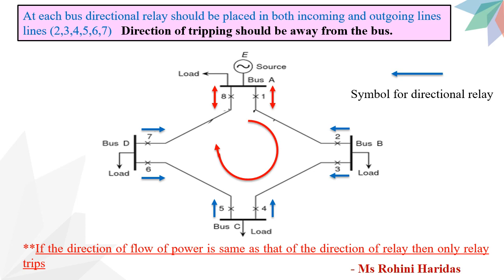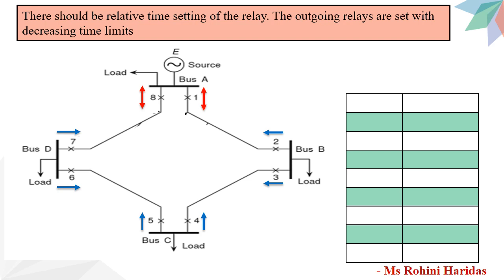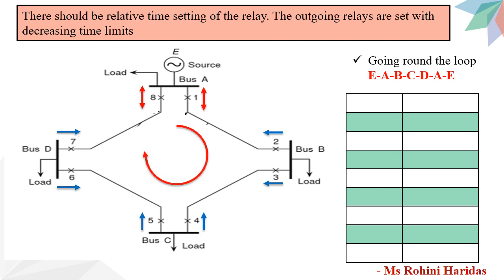If the direction of the power flow is the same as the direction set for the relay, then only the relay trips. Rule number 3 is that there should be a relative time setting of the relays. The outgoing relays are set with decreasing time limits as we go around the loop. Please keep in mind: here we assign time settings to outgoing relays only; for incoming relays, do not assign anything.